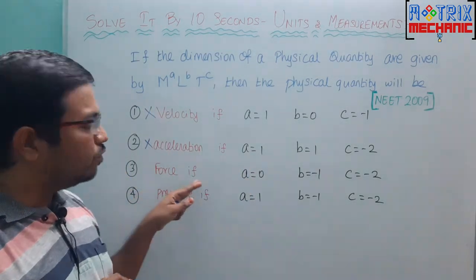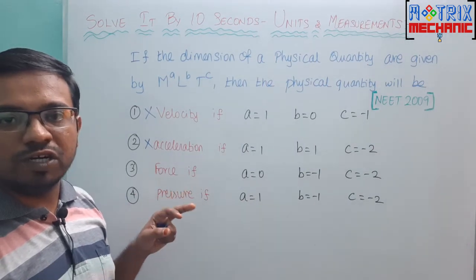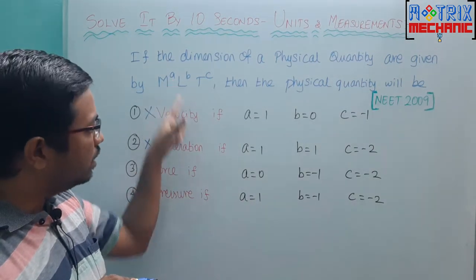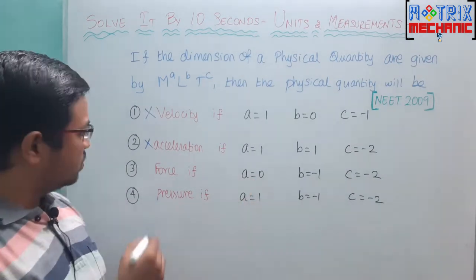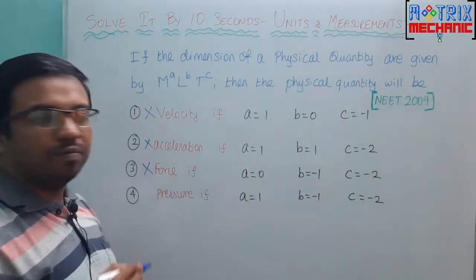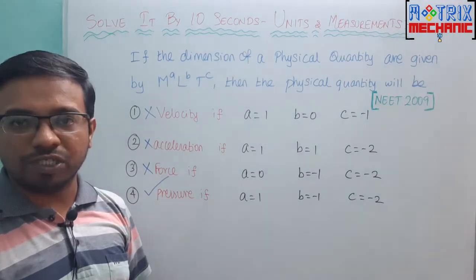Force, we know very well F equals ma. Definitely mass should be there, but here the a value is 0. So this also will not come. Definitely our answer will be the fourth option.